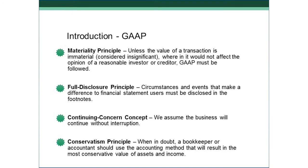The last principle is the Conservatism Principle. When in doubt, a bookkeeper or accountant should take the most conservative approach — the most conservative value of assets and in how income is reported. I never want to overstate my income, because that could influence someone's opinion of my company and lead to a very negative result. Understating income isn't good either. What I want is to state things properly — not understated, not overstated — but when in doubt, I err on the side of conservatism.